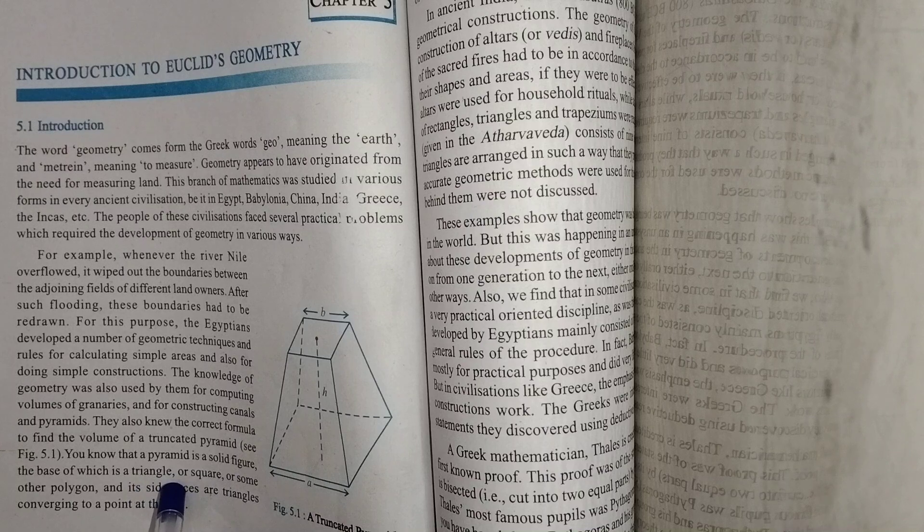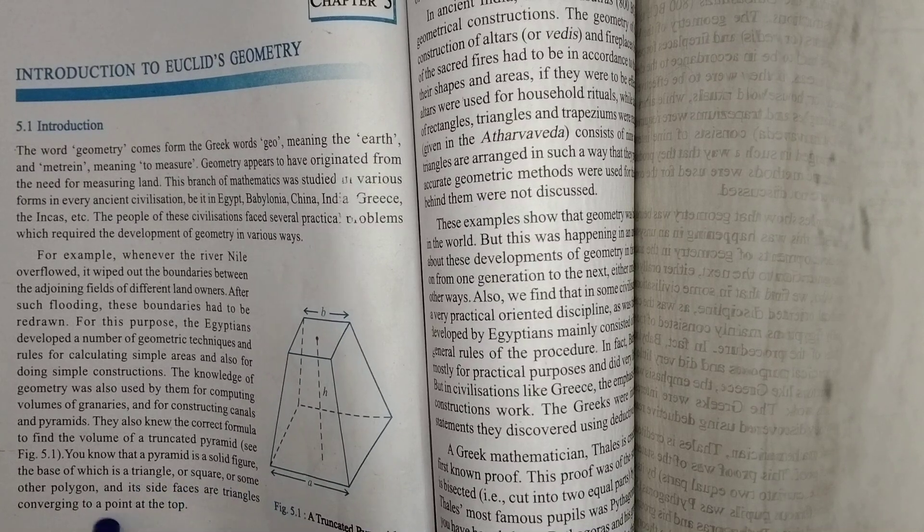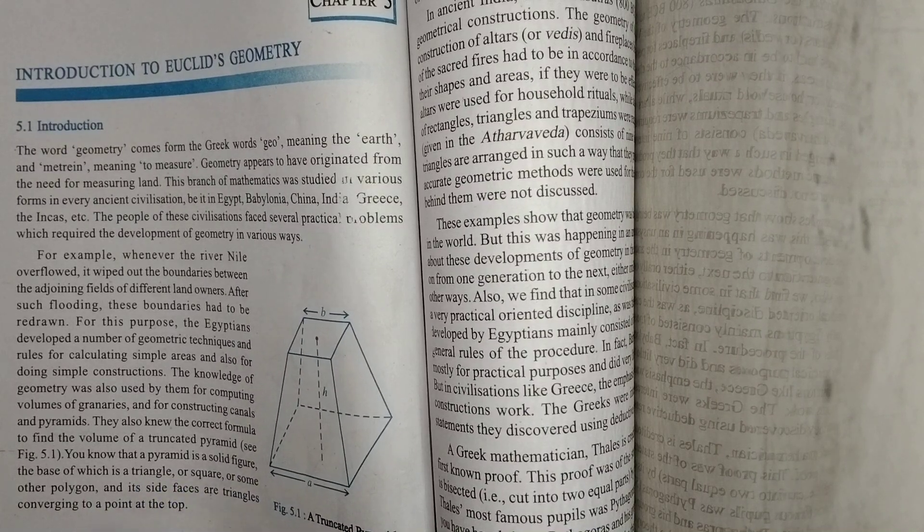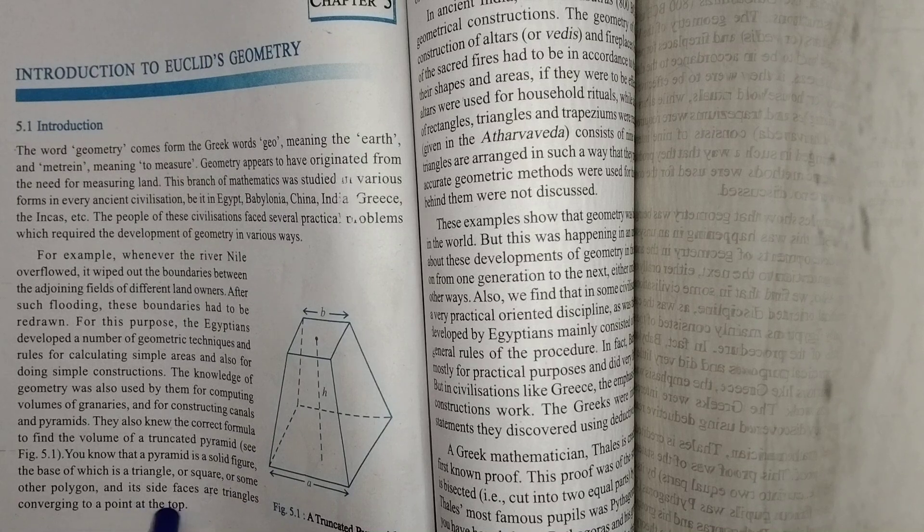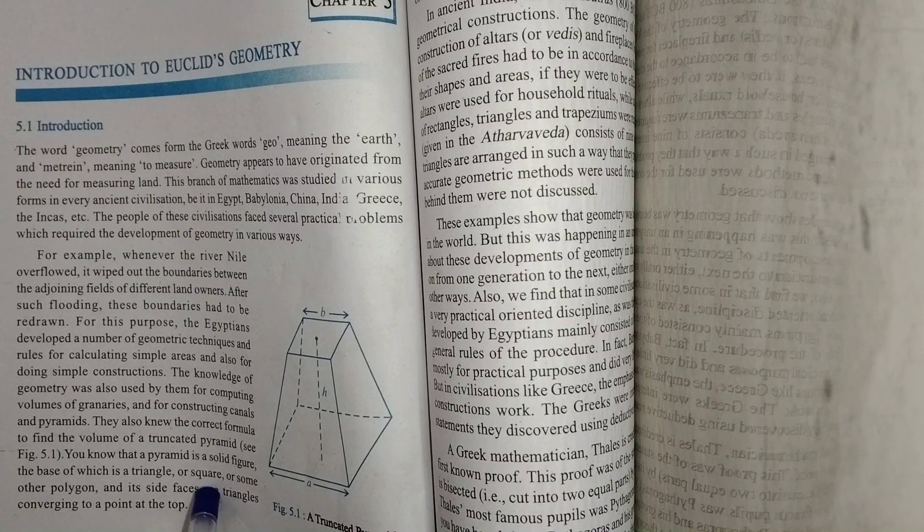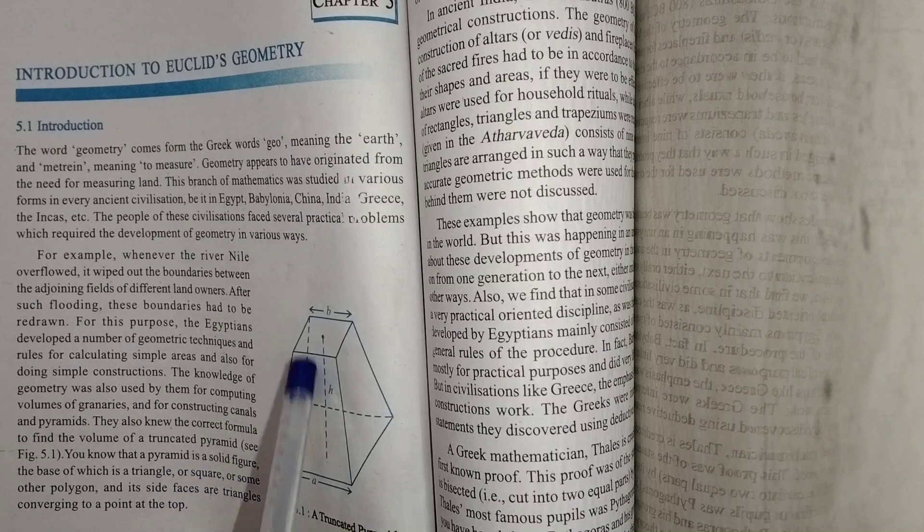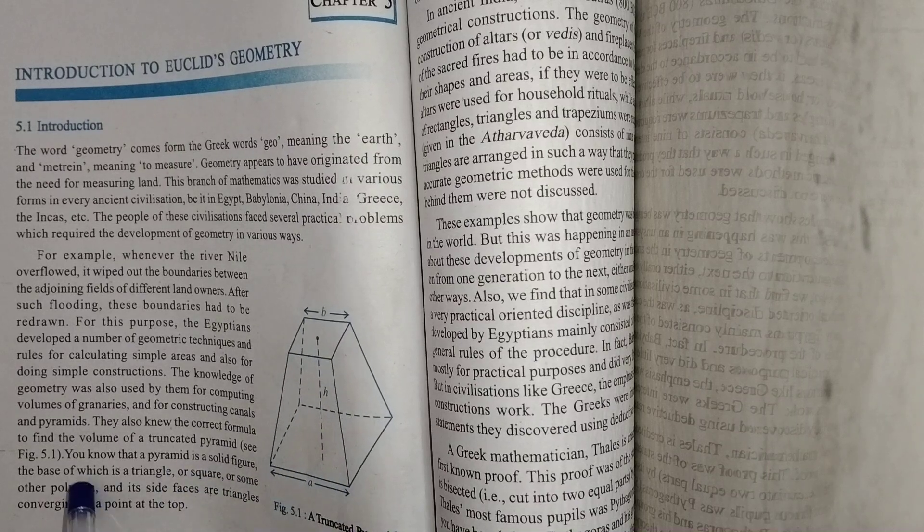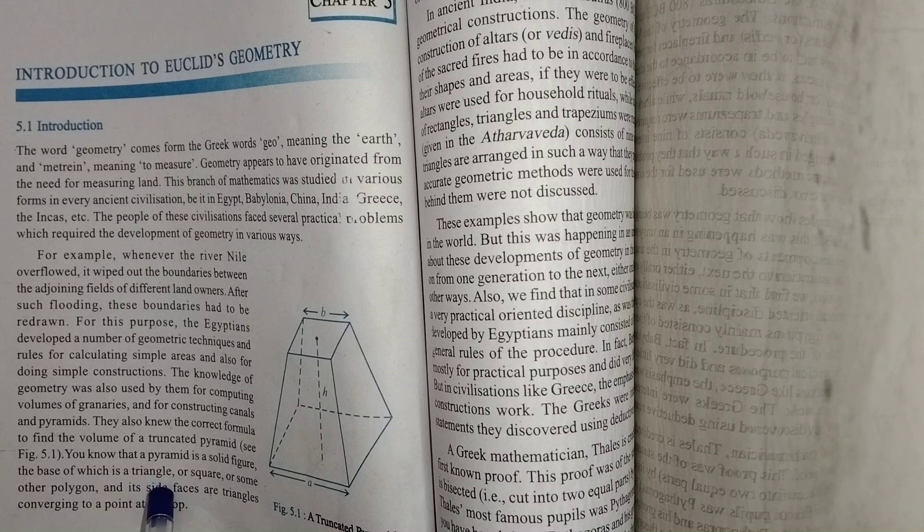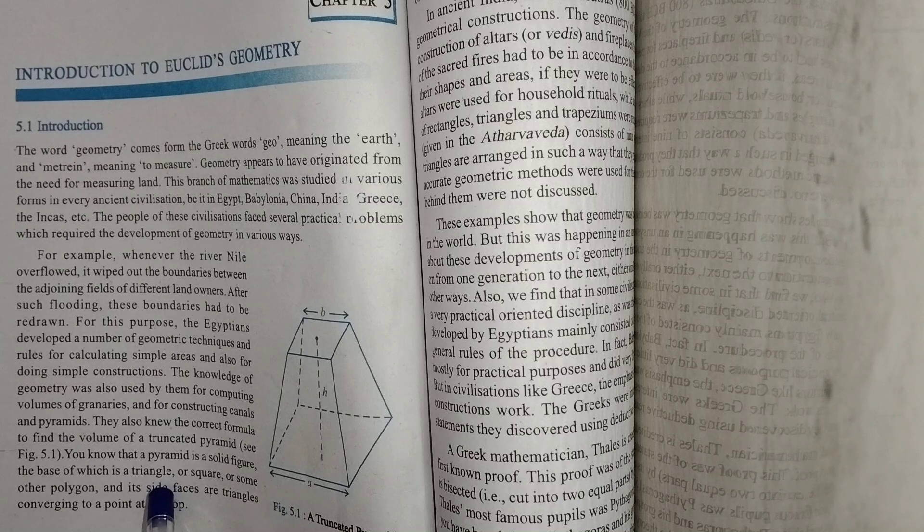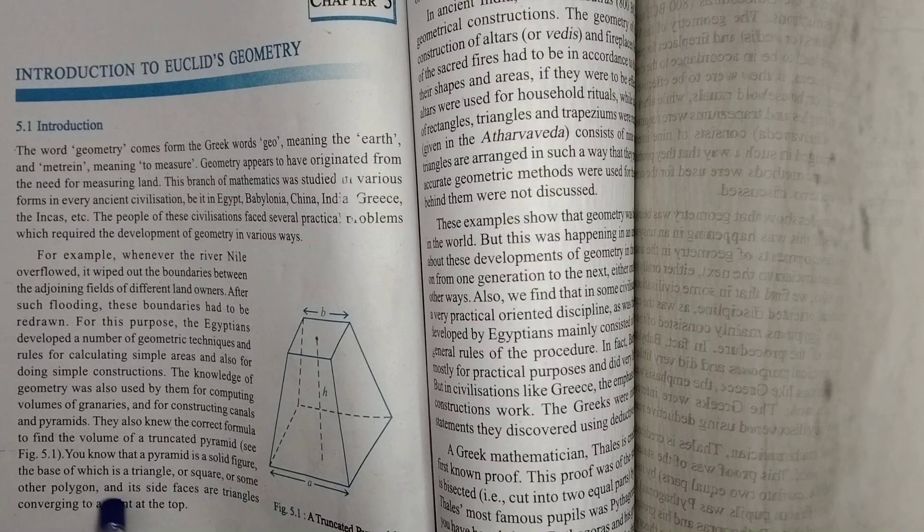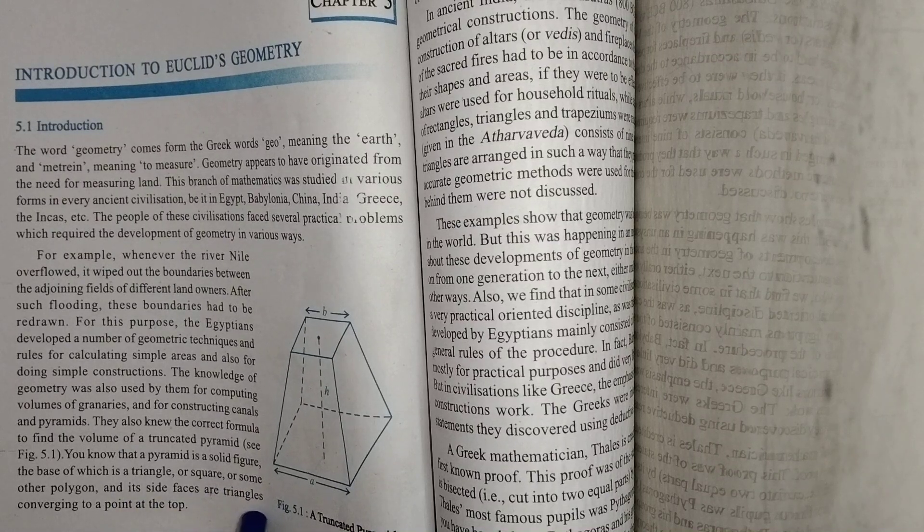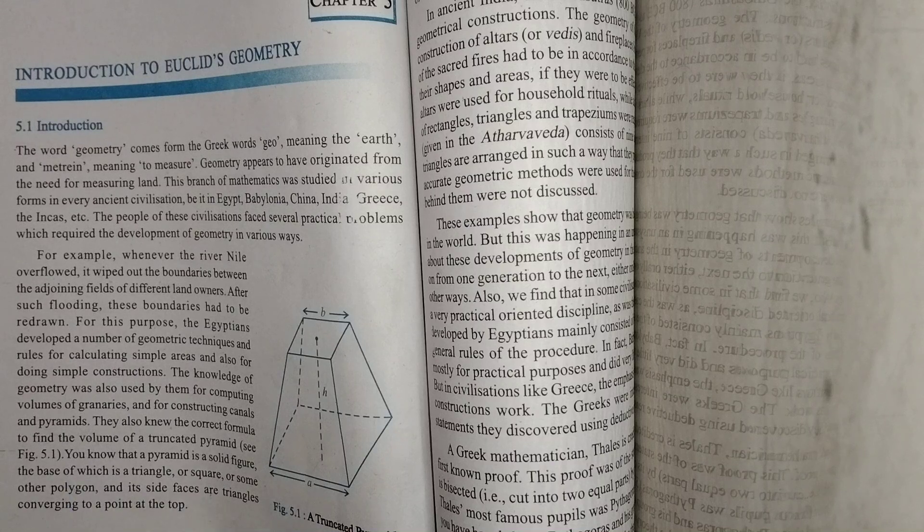You know that a pyramid is a solid figure, the base of which is a triangle or square or some other polygon, and its side faces are triangles converging to a point at the top.